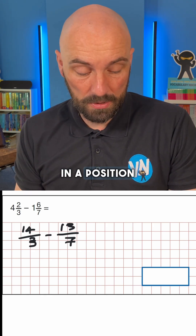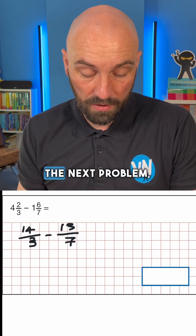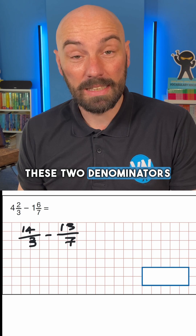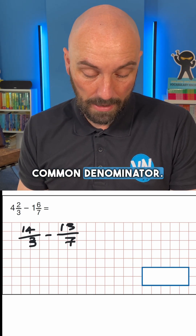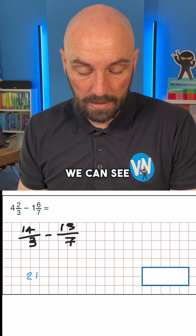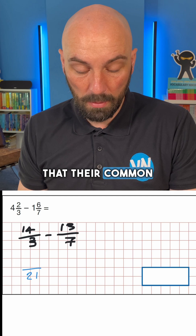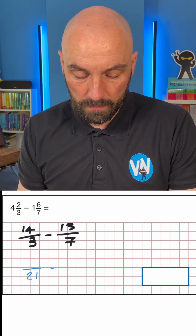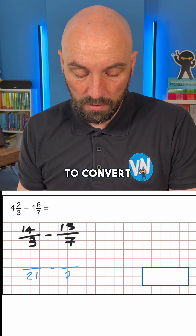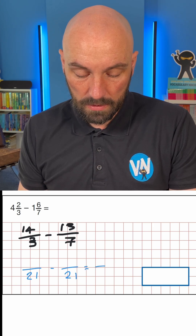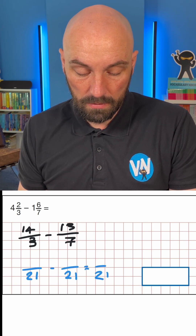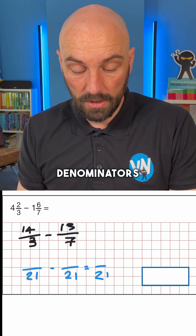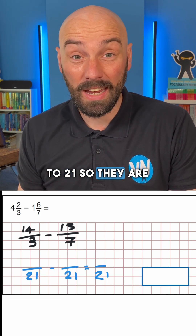Now we're in a position where we can solve the next problem, which is that these two denominators are different. So we need a common denominator. The common multiple of three and seven is 21, so we're going to convert both fractions to have a denominator of 21 so they are equivalent.